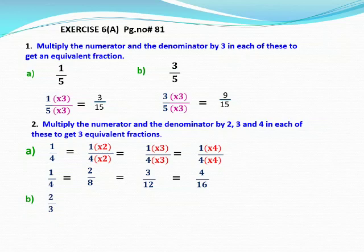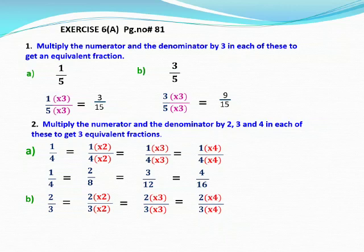Next question is 2 by 3. Here also we have to multiply numerator and denominator by 2, 3, and 4. Multiply by 2: 2 times 2 is 4, 3 times 2 is 6, giving 4 by 6. Next, multiply by 3: 2 times 3 is 6, 3 times 3 is 9, giving 6 by 9. Next, multiply by 4: 2 times 4 is 8, 3 times 4 is 12, giving 8 by 12. So these are the equivalent fractions of 2 by 3.